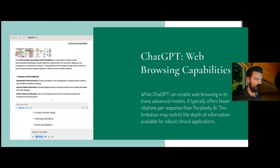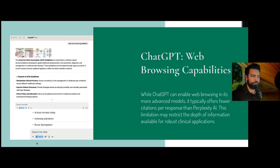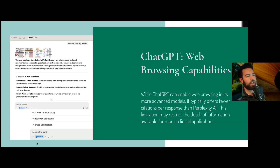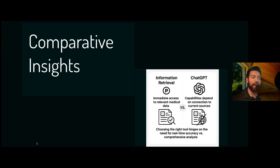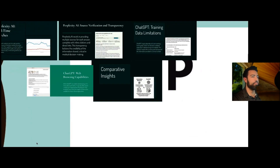You can turn on the search button in ChatGPT — this blue globe — for web browsing to ask it for the latest data and guidelines. However, it's not as transparent in terms of citations, and it's not guaranteed you'll get all the latest resources. Comparatively, Perplexity gives you immediate access to relevant medical data, while ChatGPT's capability depends on whether web search is on, and it usually does not provide as comprehensive an analysis.